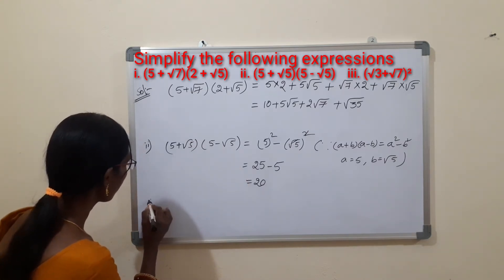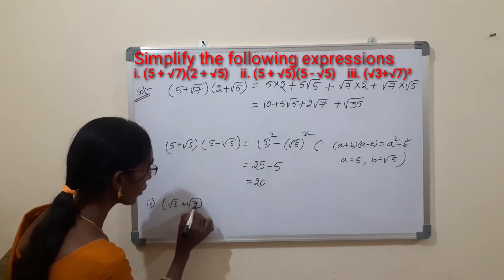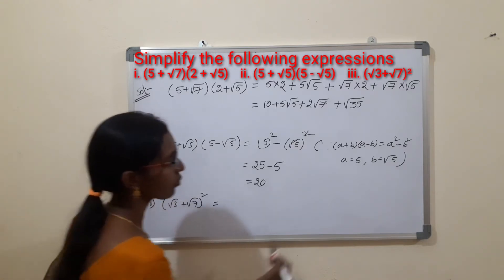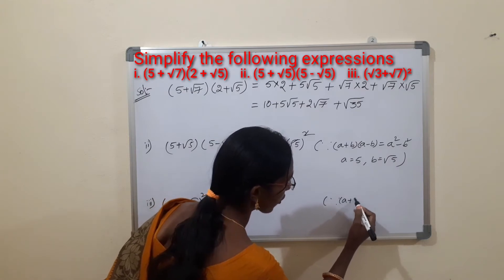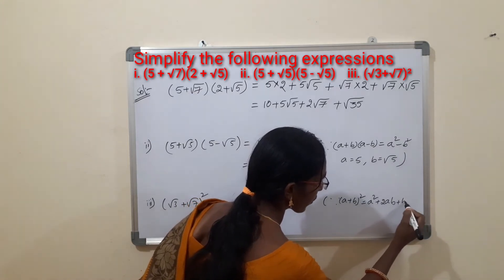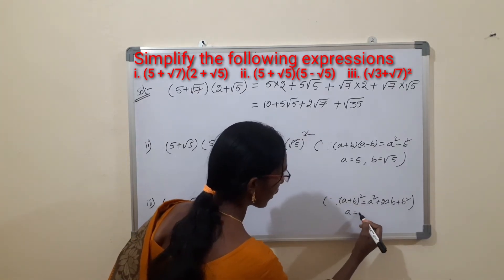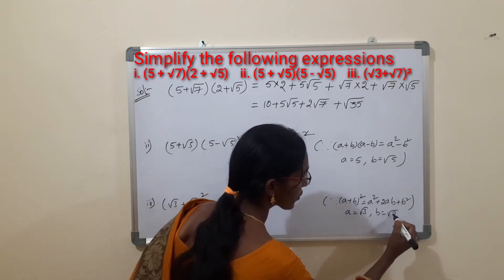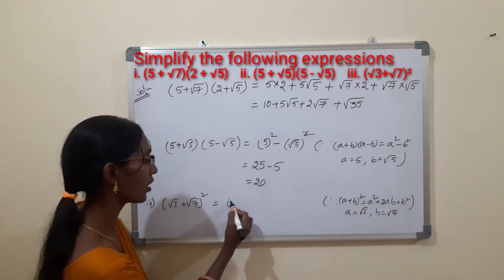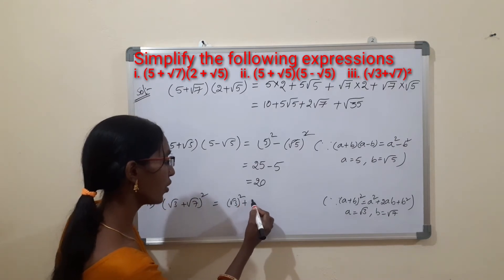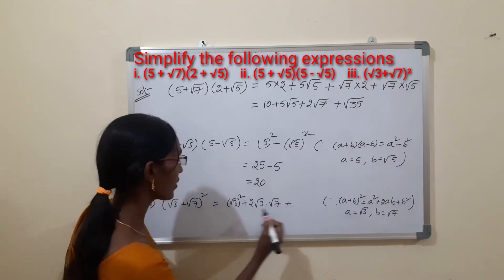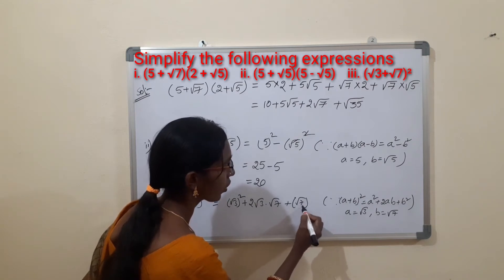The third one is (√3 + √7)². This is in the form of (A + B)², and the formula is (A + B)² = A² + 2AB + B². Here A = √3 and B = √7. Substituting: (√3)² + 2 × √3 × √7 + (√7)².